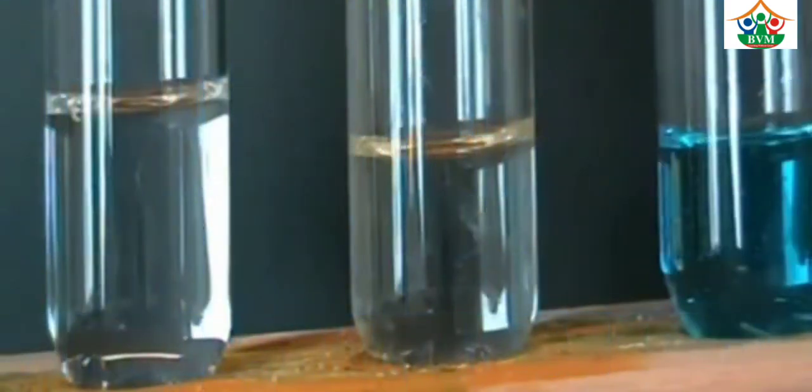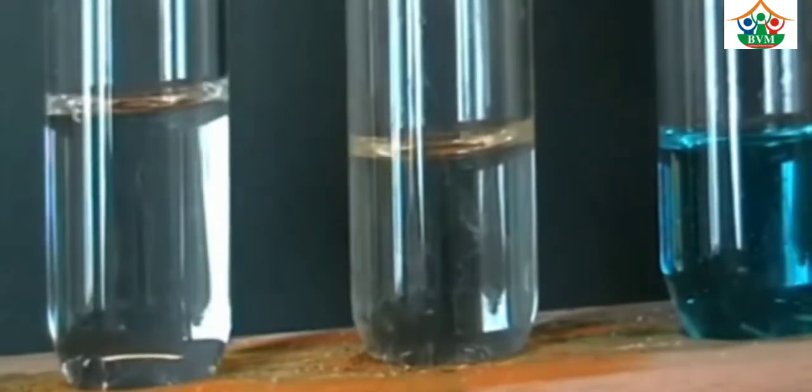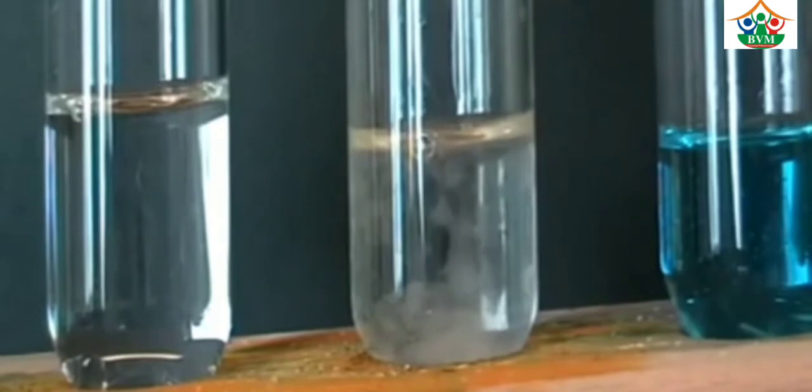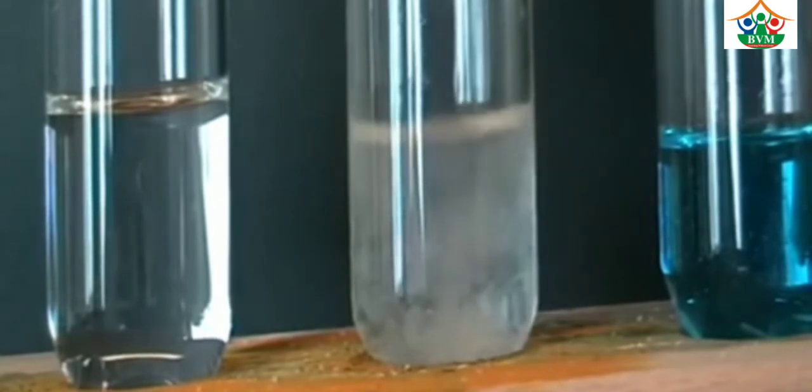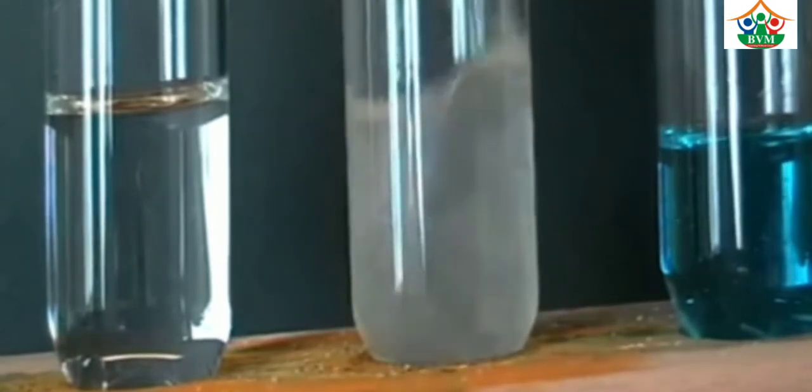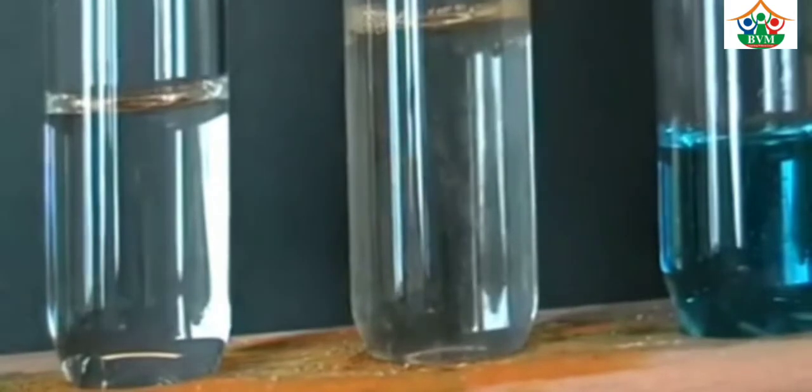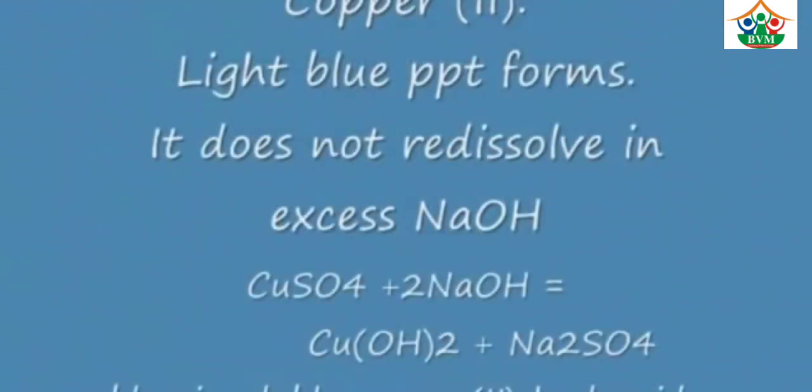Now, what about aluminum? When I put sodium hydroxide into aluminum ion solution, a white precipitate is formed in gelatinous form. When I add excess sodium hydroxide, it also becomes soluble.